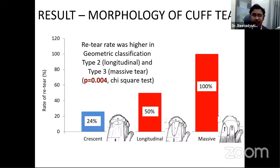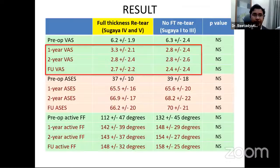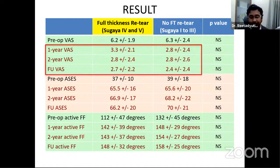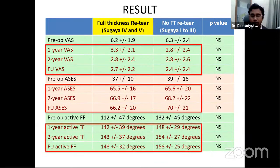Functional outcome comparison showed no significant difference in pain scores, American Shoulder and Elbow Scores, or active forward flexion regardless of whether patients had a full thickness re-tear, partial re-tear, or no tear — provided a good rehabilitation protocol was followed. However, this is only a short-term follow-up of up to two years; long-term follow-up would likely show significant functional differences.